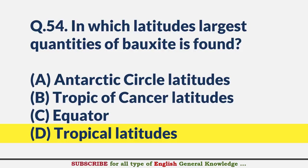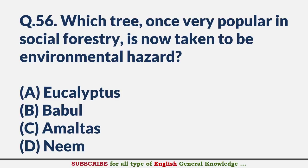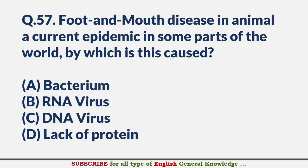Which was the first English ship to come to India? — Answer C: Red Dragon. Which tree, once very popular in social forestry, is now taken to be an environmental hazard? — Answer A: Eucalyptus. Foot-and-mouth disease in animals, a current epidemic in some parts of the world — by what is it caused? — Answer A: Bacterium.